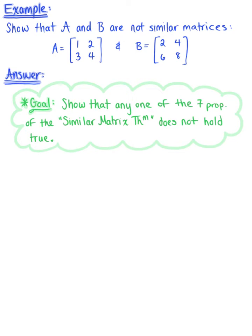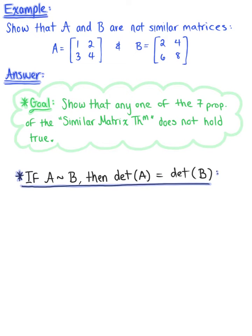So I'm going to use property number one that says if matrix A is similar to matrix B, then the determinant of matrix A is equal to the determinant of B.